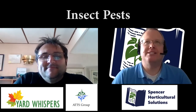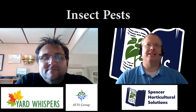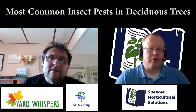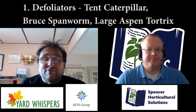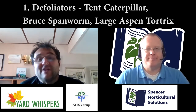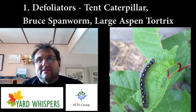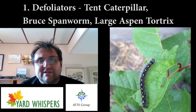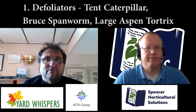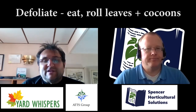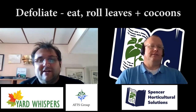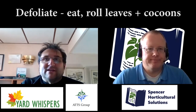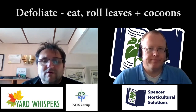We're talking about insect pests, so from the big list of possible insects that affect our trees, what are the most common ones on deciduous or broadleaf trees? Most of the time for deciduous broadleaf trees it's the foliators. There's a whole range of them, but probably three of the most common are Aspen tent caterpillar, Bruce spanworm, and large Aspen tortrix. What they all have in common is they defoliate the trees — they're eating leaves one way or another, either chewing, making holes, or rolling the leaves up.